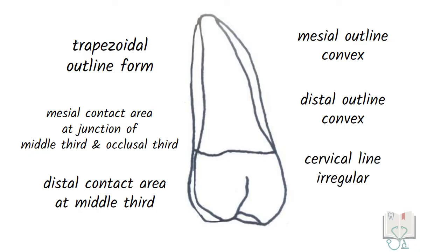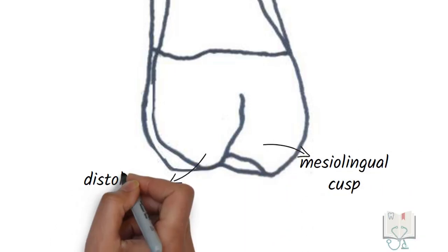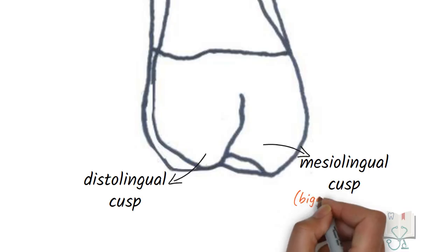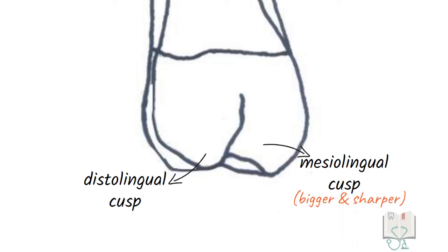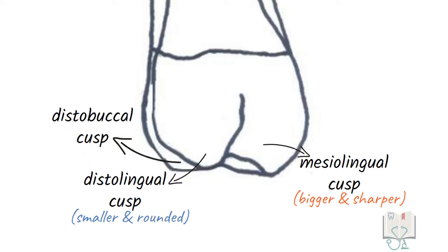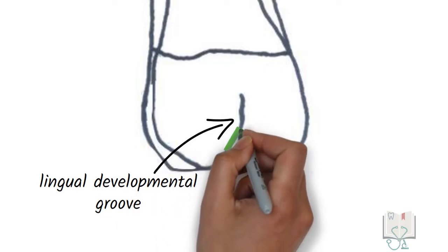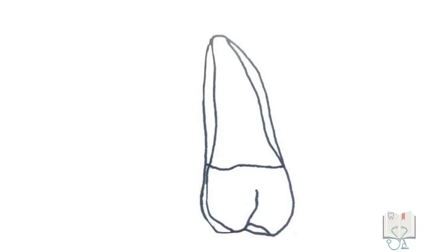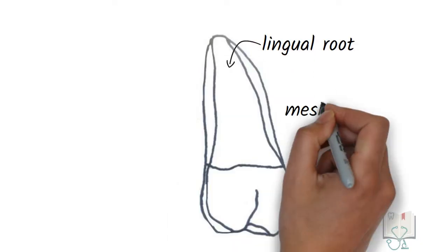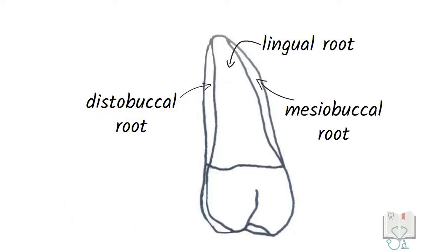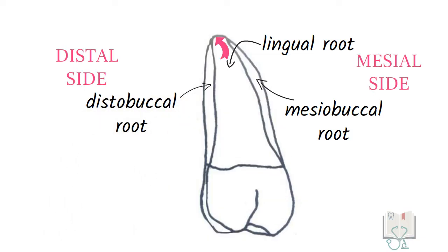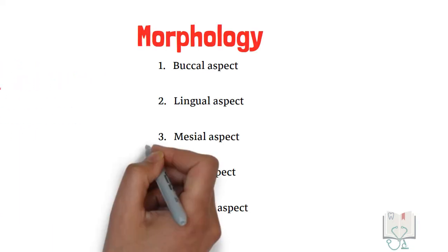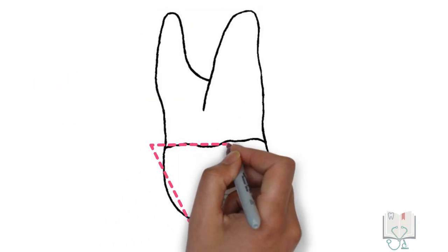Next, the lingual aspect. All features of the outline form of the crown from the buccal aspect are seen in the lingual aspect as well. The features which are different are: both lingual cusps — mesiolingual and distolingual — are seen, with the mesiolingual cusp being larger and sharper and the distolingual cusp being smaller and rounded. A partial distobuccal cusp is also seen. A lingual developmental groove is seen running cervically between both lingual cusps. All three roots are visible from this aspect, with the lingual root in front and both buccal roots seen partially on the sides. All roots have a slight distal tilt.